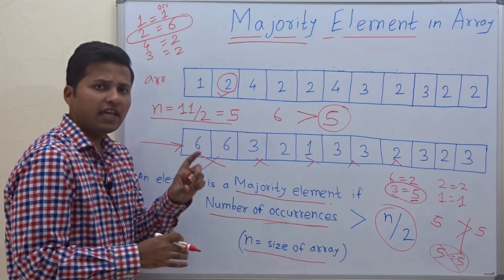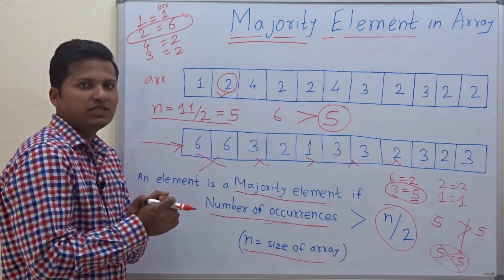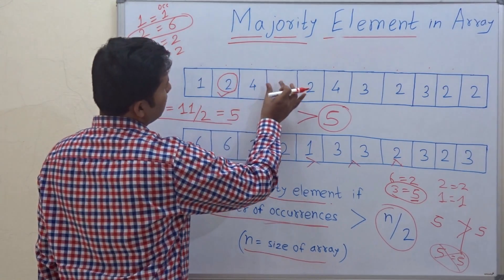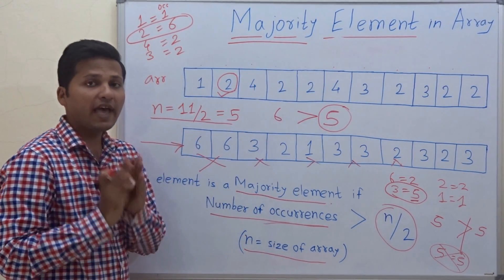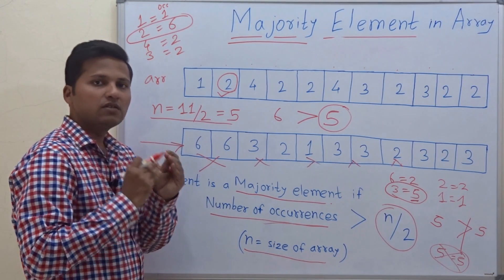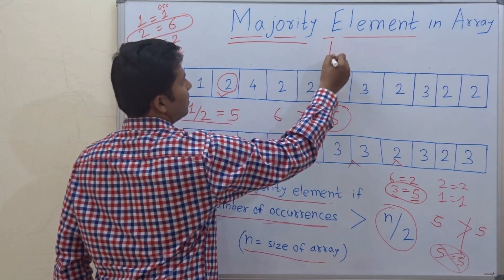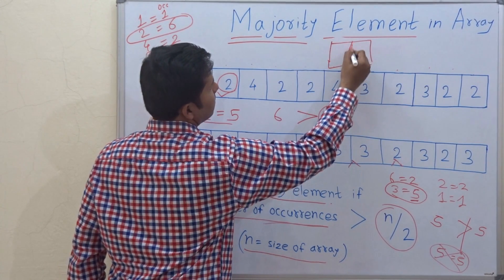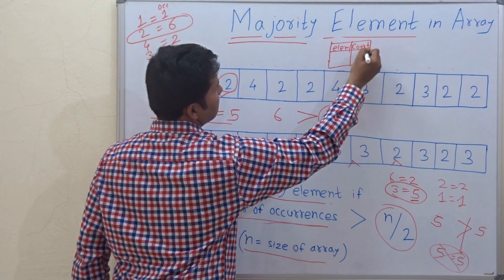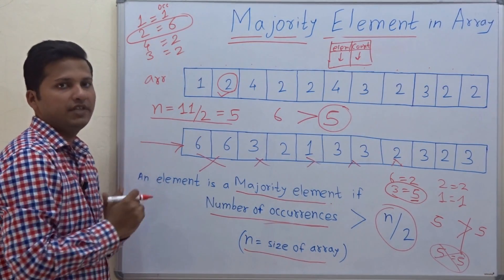So this array doesn't have any majority element. In an array there can be at most one majority element or no majority element — there cannot be more than one. For counting the number of occurrences of each element, you can use a hash table, where the element is the key and the count of that element is the value.